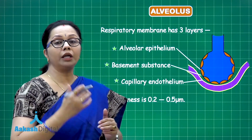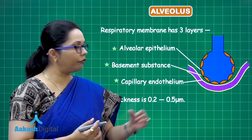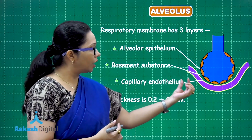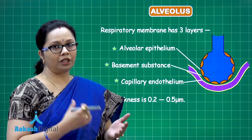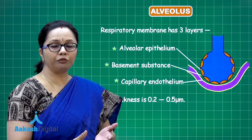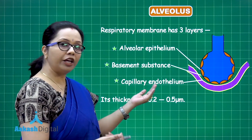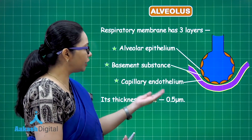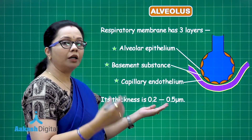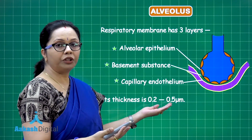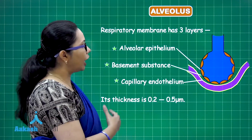The respiratory membrane must be very thin so that simple diffusion can take place. If the respiratory membrane becomes thicker, the diffusion rate decreases — there is an inverse proportionality. The thinner the respiratory membrane, the higher the rate of diffusion.